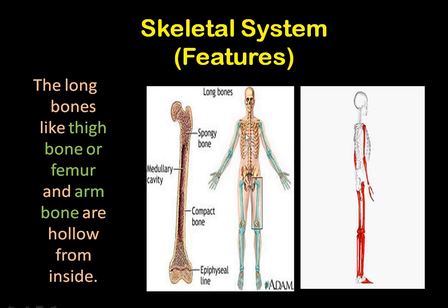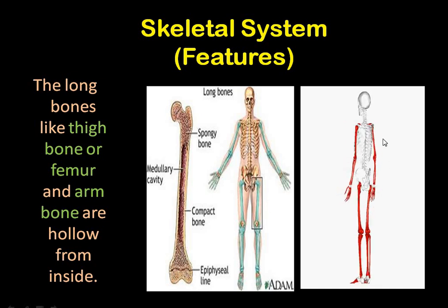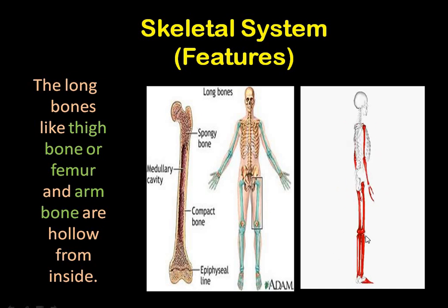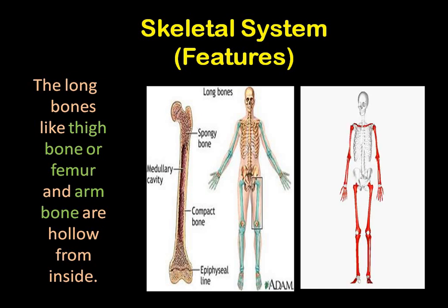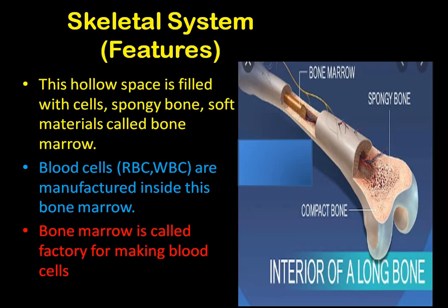These are the long bones — the red side and the blue side here — these are the long bones, and they are comparatively hollow from inside, but not like birds' bones. They have spongy bone and bone marrow inside them. So if it is hollow, something is there to fill it — it is filled with cells: spongy bone and soft material called bone marrow. Inside the bone, just next to the outer side, there is a spongy bone, and inside that is the bone marrow.